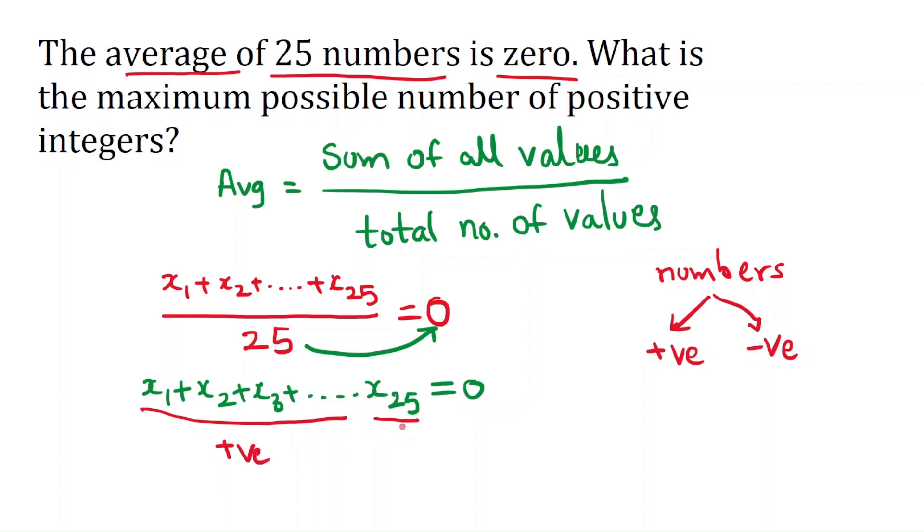then if I take only one number as negative, then the sum of these will be zero. Here they are asking the maximum possible number of positive numbers. So how many can I take? Till the max, 24 numbers. 24 positive numbers I can take, so 24 is the answer.